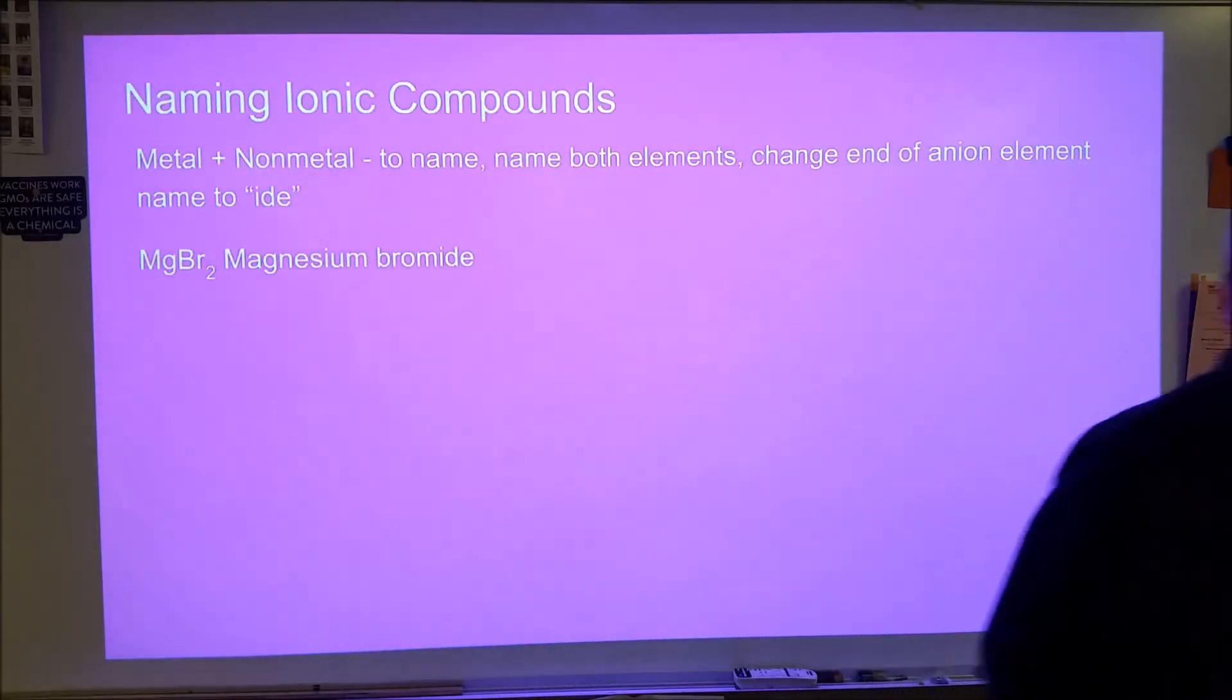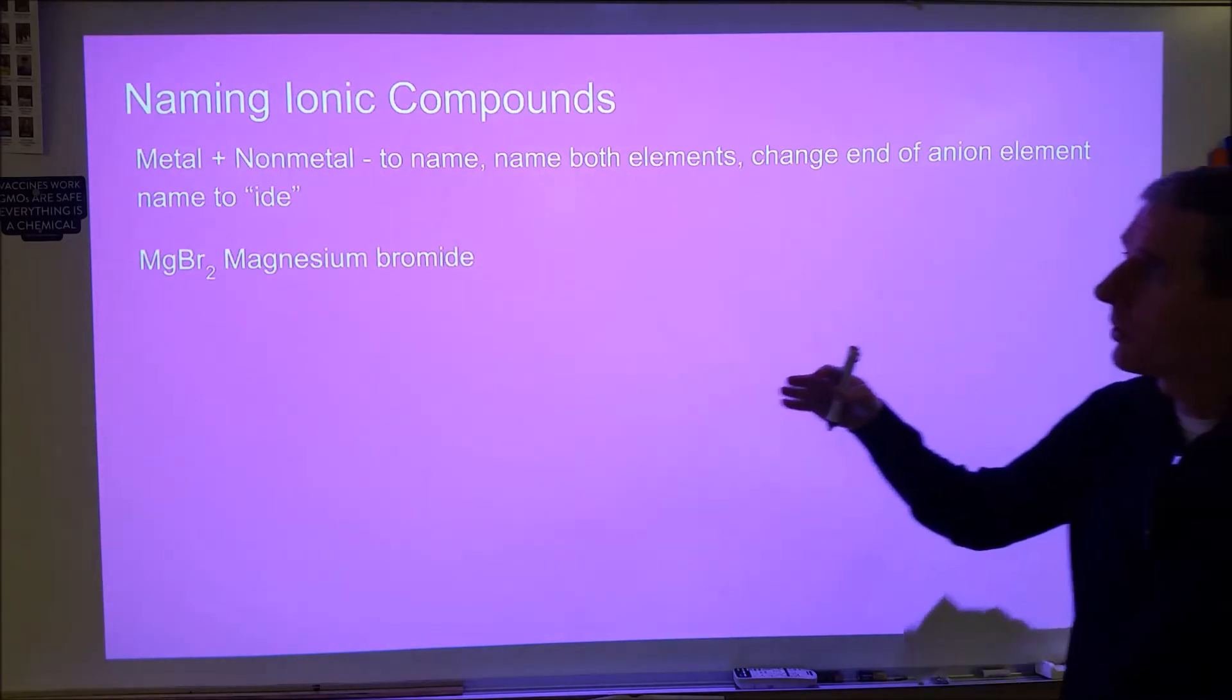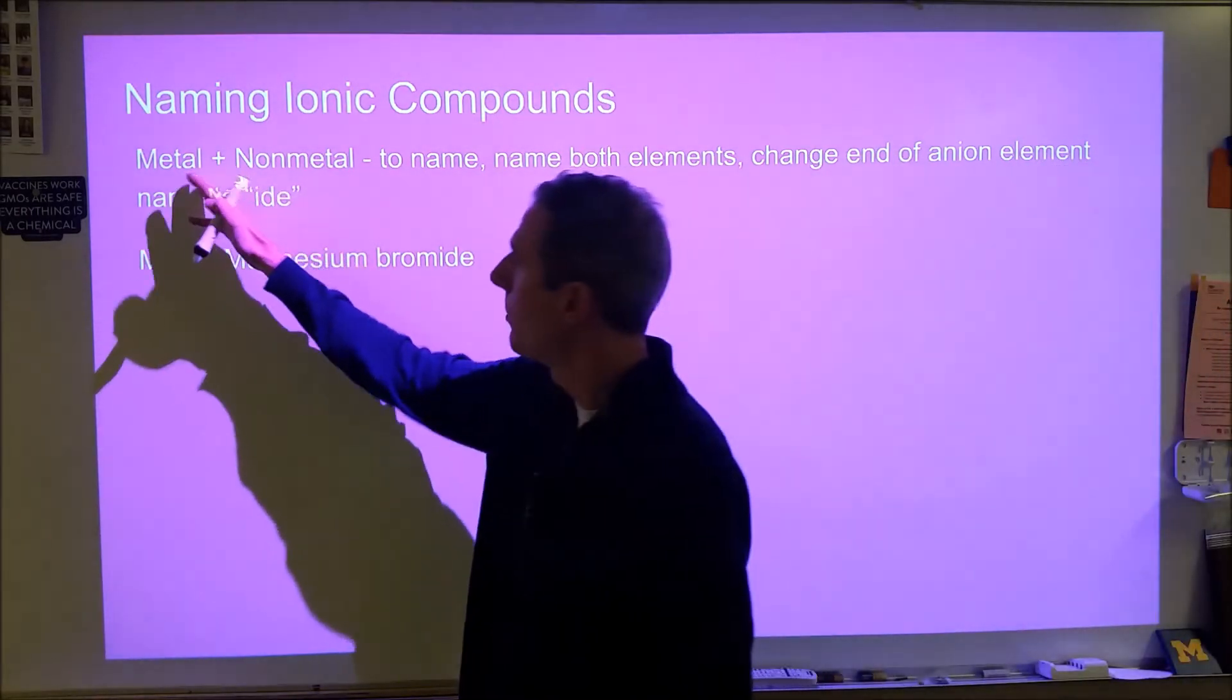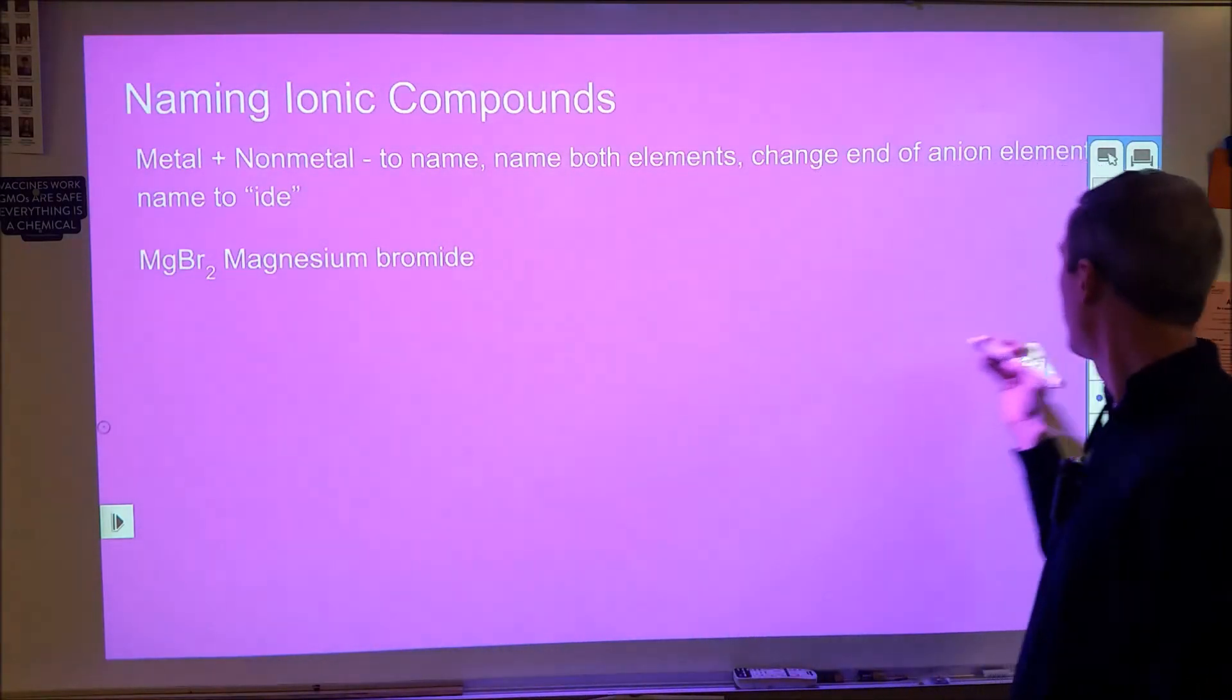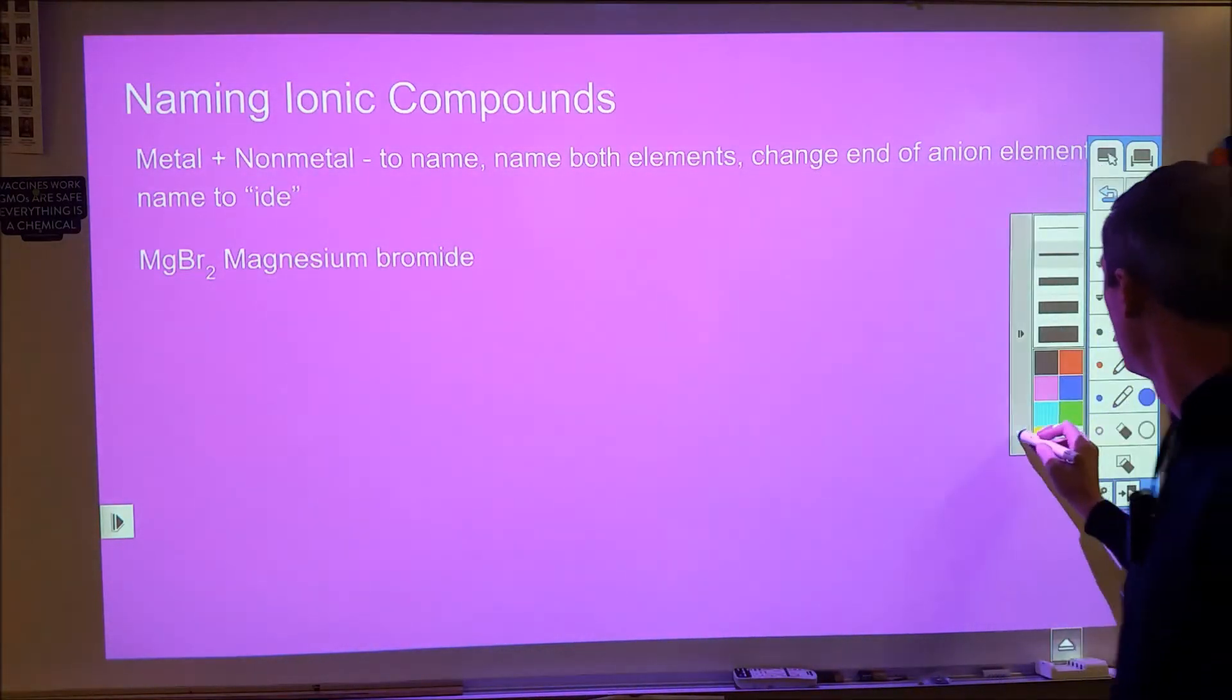So first of all, you need to be able to recognize what you're looking for. An ionic compound is going to occur whenever you're dealing with a metal paired up with a non-metal. Fancy name for that, we would call that a binary compound typically.